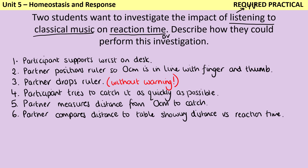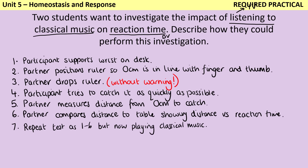Having done this ruler drop test once, that's not the whole investigation. We need to change our independent variable, so we're then going to repeat steps one to six but now playing the classical music and seeing whether that has an impact on reaction time. We're also going to repeat this several times and use this to calculate a mean both for without classical music and for with classical music — you're obviously not going to combine your two sets of data. We also want to mention that we're going to discard any anomalous results.